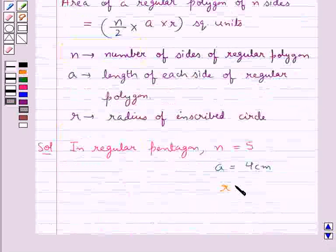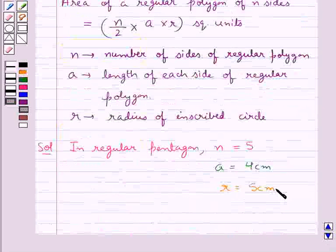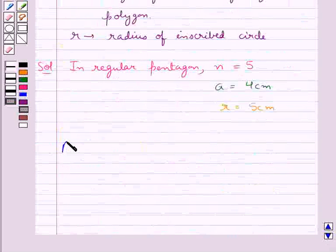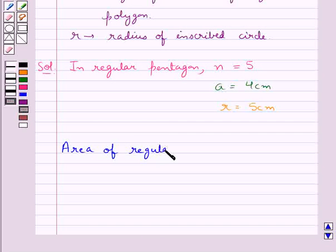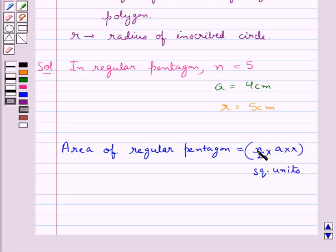Now we have the area of the regular pentagon is equal to n upon 2 into a into r square units. We put the value for n, a, and r, so this is equal to 5 upon 2 into 4 into 5 cm square.